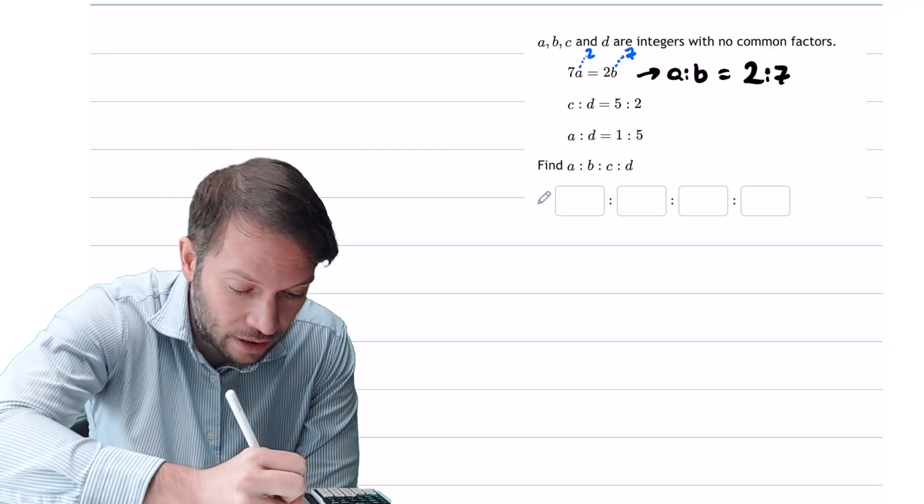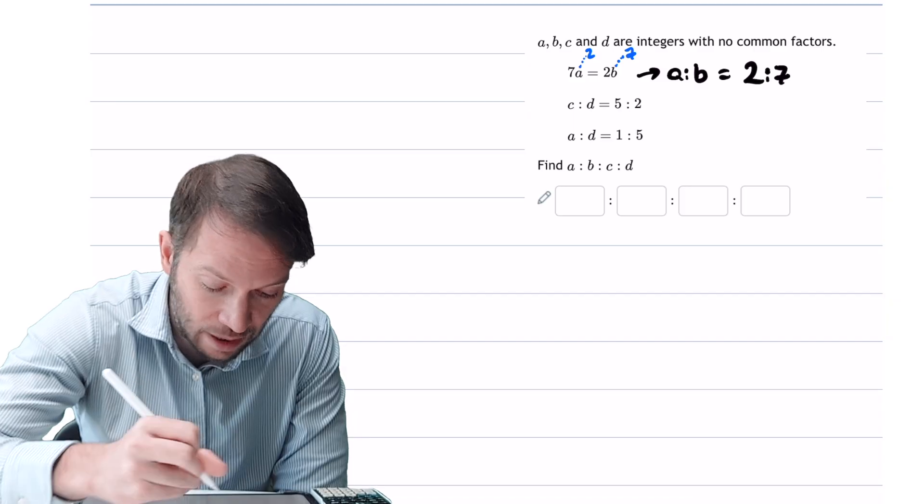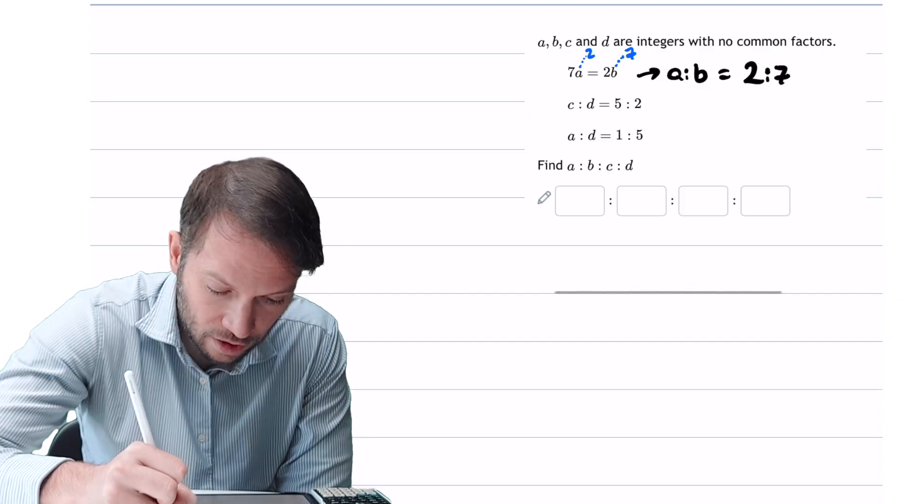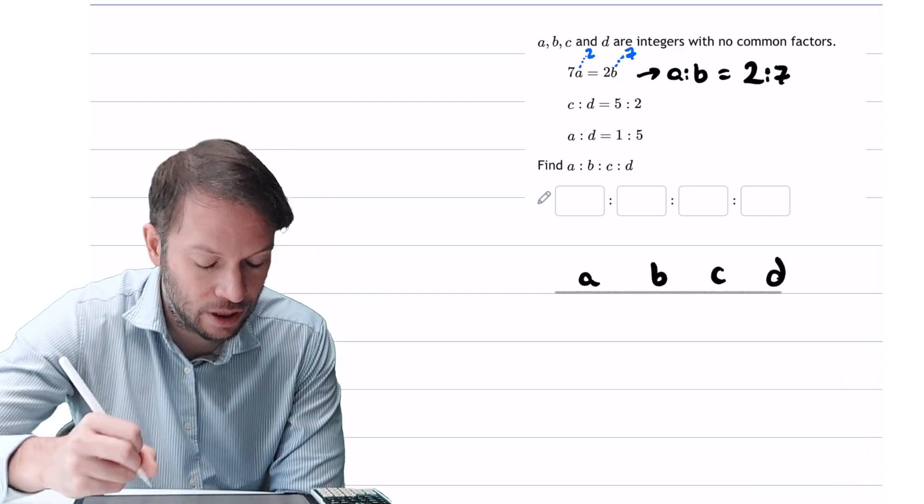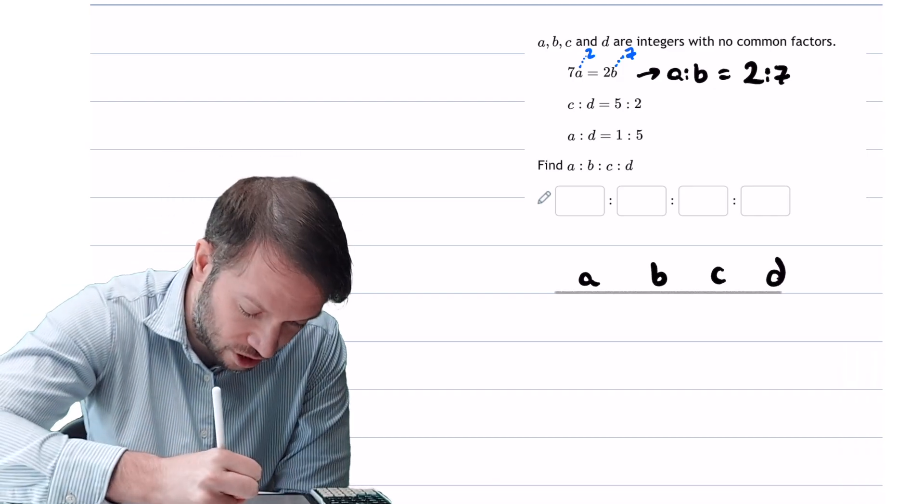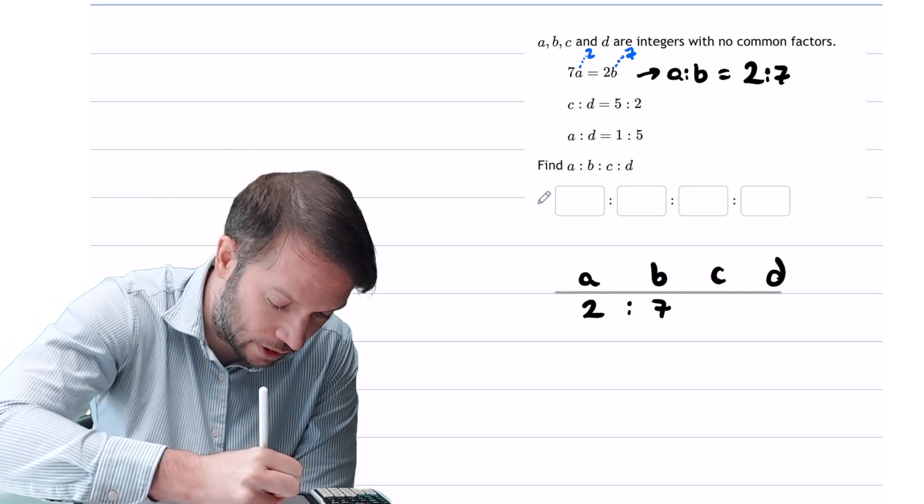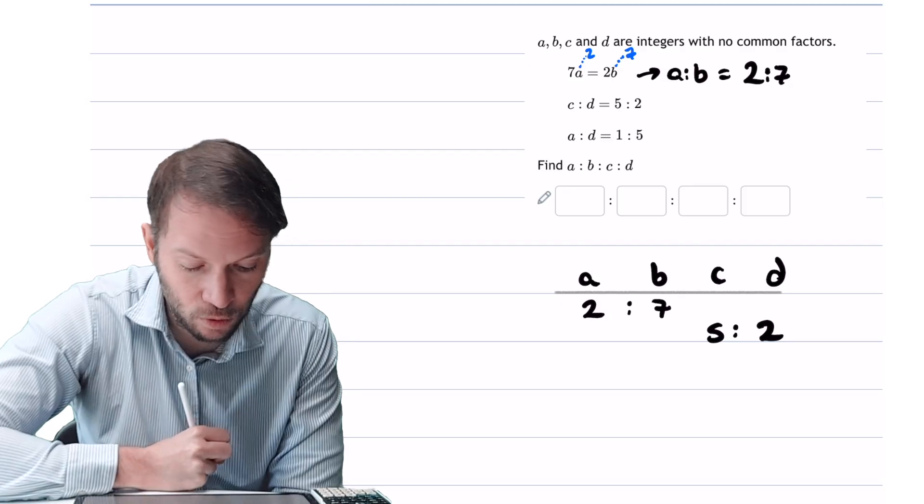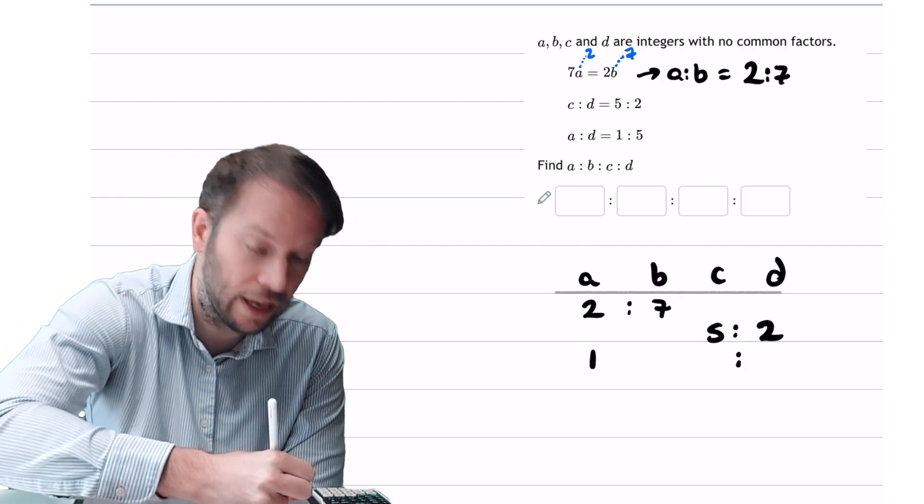Now if we want to combine this ratio, this ratio, and this ratio, we should draw a little table. So we want to find the ratio of a to b to c to d. We worked out the ratio of a to b is 2 to 7. We also have the ratio of c to d is 5 to 2, and we also have that the ratio of a to d is 1 to 5, like that.